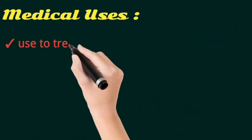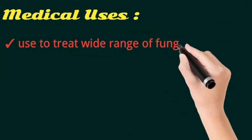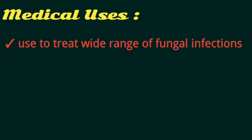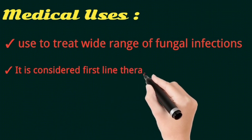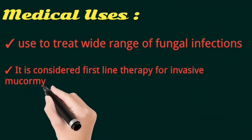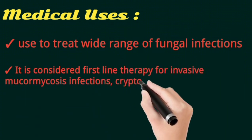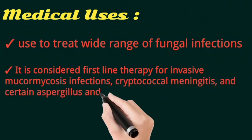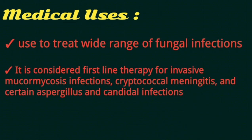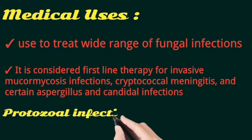Medical uses: Amphotericin B is used to treat a wide range of fungal infections. It is considered first-line therapy for mucormycosis infection, cryptococcal meningitis, and certain aspergillus and candidal infections, as well as protozoal infections.